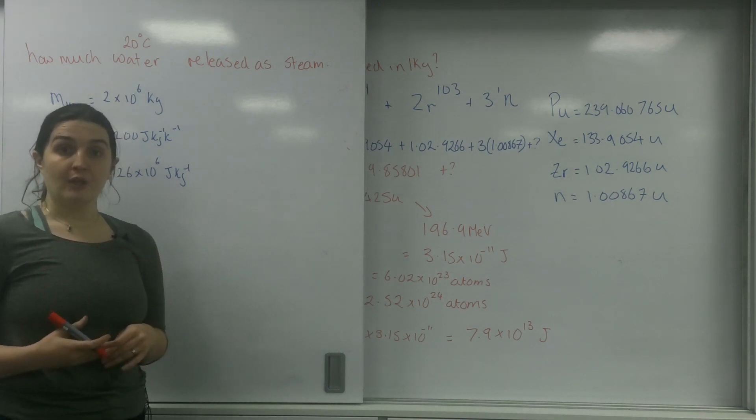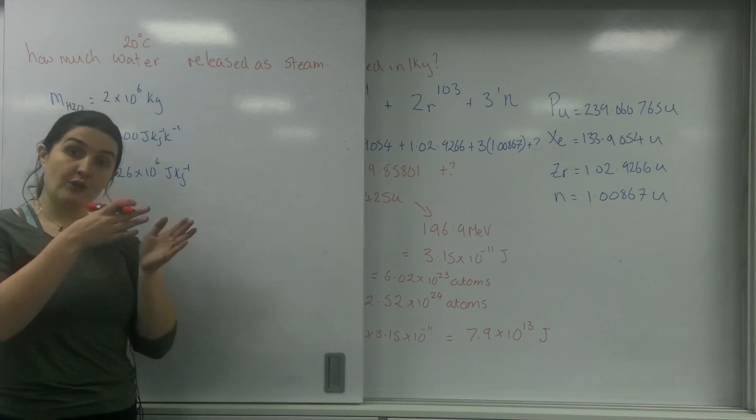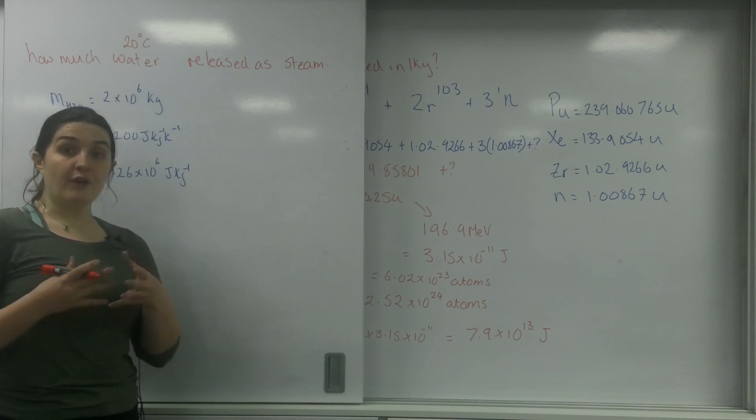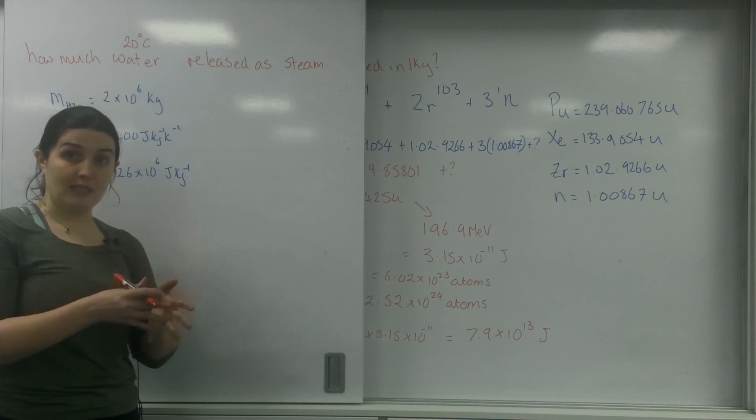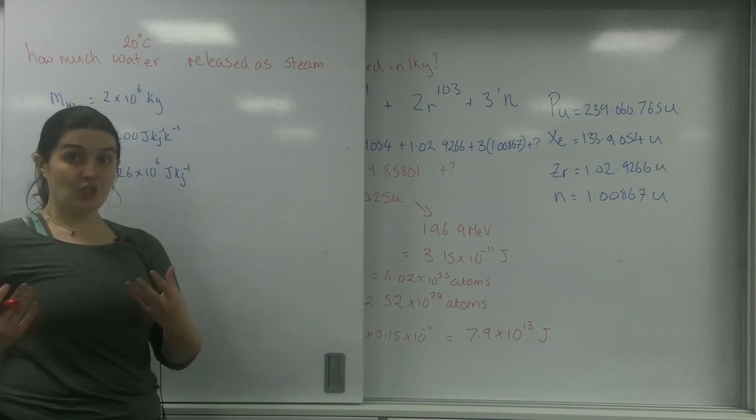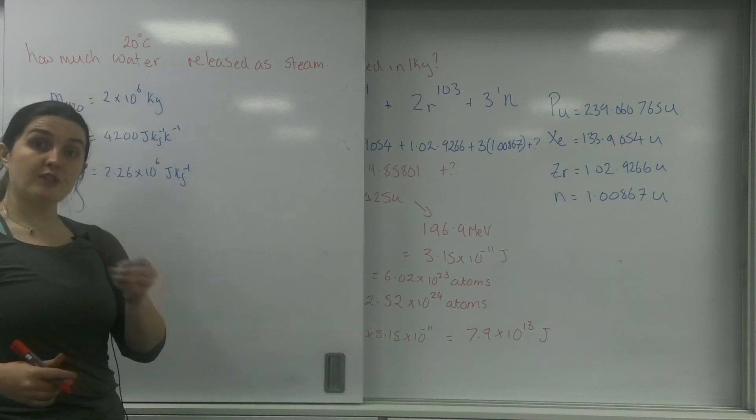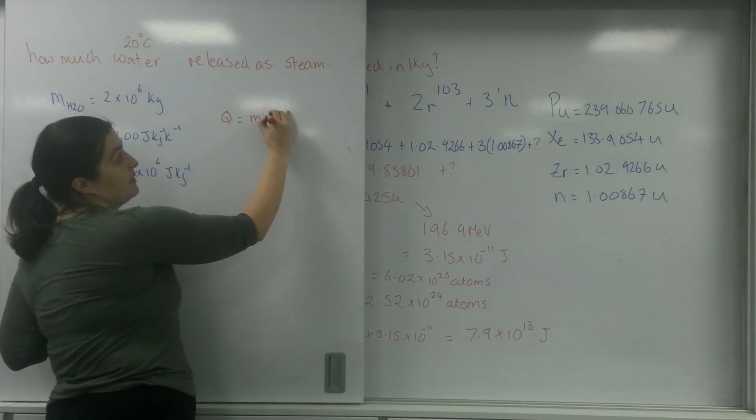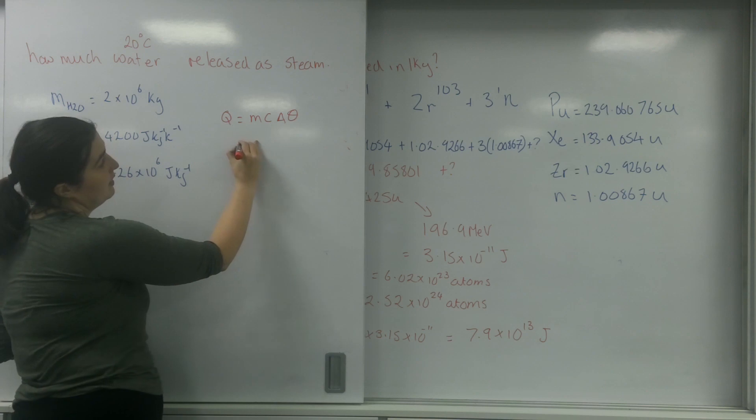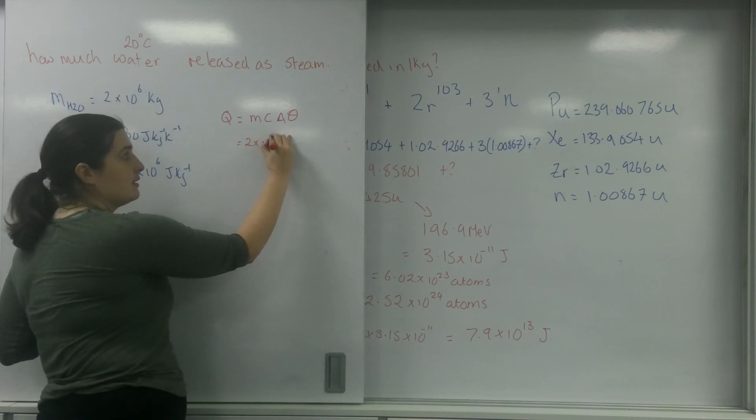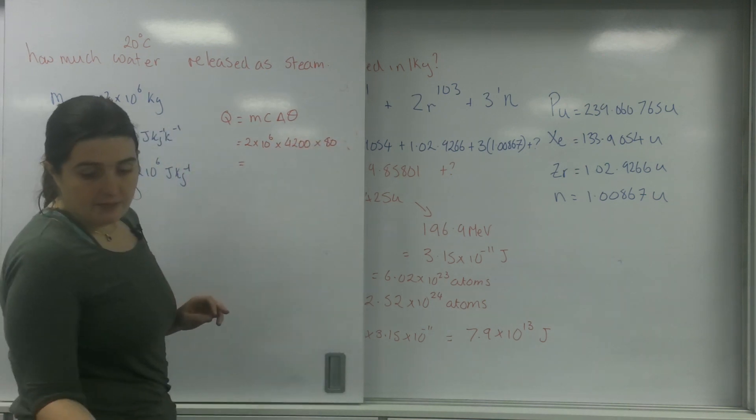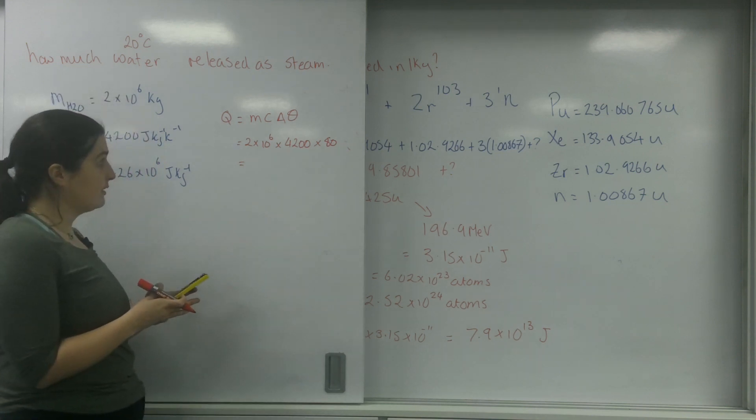To be released as steam, the water not only has to go from 20 to 100 degrees but then has to be released to steam. If I can find out how much energy it took to go from 20 to 100, whatever is left over would be the energy used to convert it into steam. I'm going to use Q equals mc delta theta. So 2 times 10 to the 6 times by 4200 times by 80, the temperature difference, gives me 6.72 times 10 to the 11 joules.